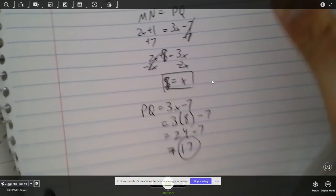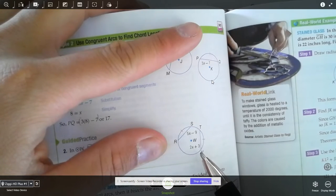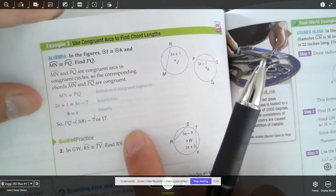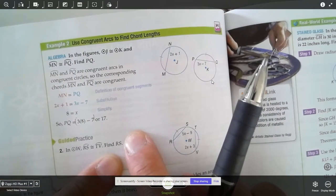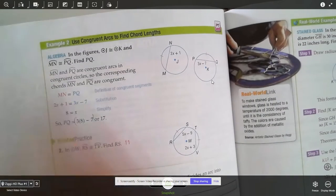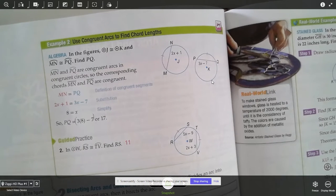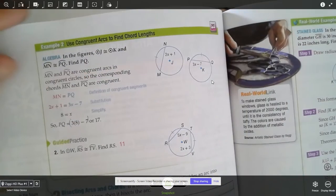If you want, you could try one in the book. It's this one right here. Solve for, I think it solves for RS. Try to find RS. You can pause it. The answer is actually going to be 11. I'm going to go ahead and move on to this next one here.